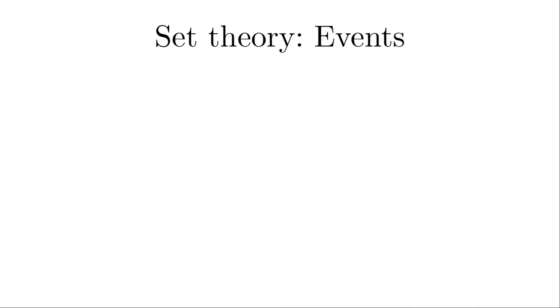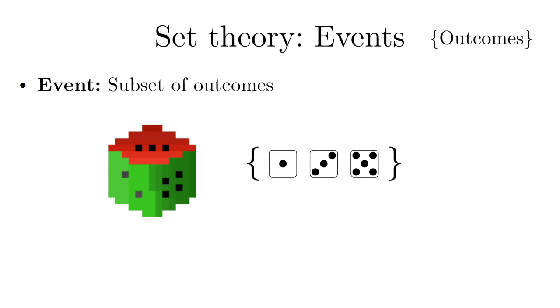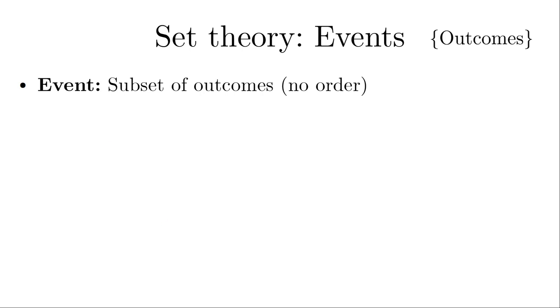Now we continue with the formulation of probabilistic questions and generalize the result of a random experiment, which so far was called outcome. We want to ask not only the question, will the die show 5 pips, but also questions like, will the die show an odd number of pips, which includes the three outcomes 1, 3 and 5. The generalized result of a random experiment is now formed by a subset of the sample space, which we call an event. Note that we use curly brackets, the set brackets, to indicate a set of elements. There is no order in a set of outcomes in contrast to later discussed tuples of outcomes, where the order is important.